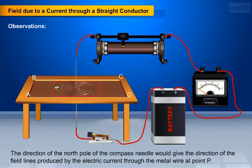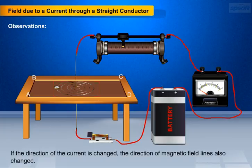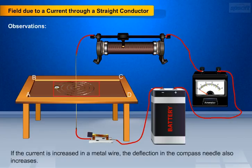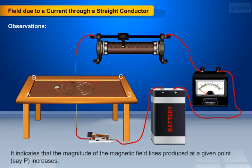We also observe that if the direction of the current is changed, the direction of magnetic field lines also changes. We observe that if the current is increased in a metal wire, the deflection in the compass needle also increases. It indicates the magnitude of the magnetic field lines produced at a given point P also increases.